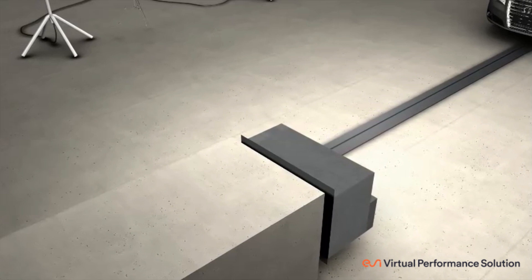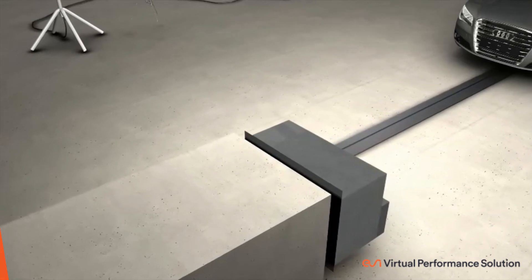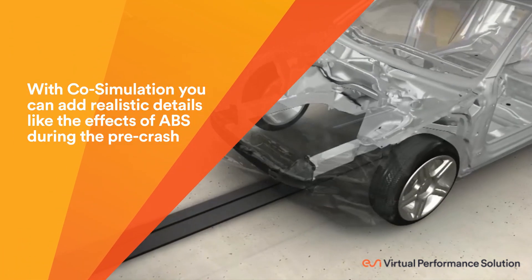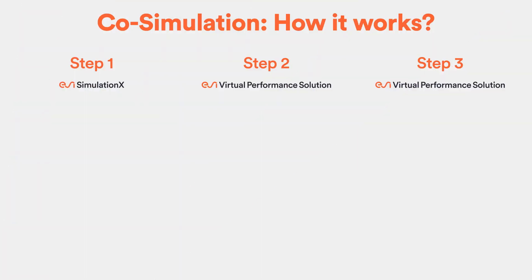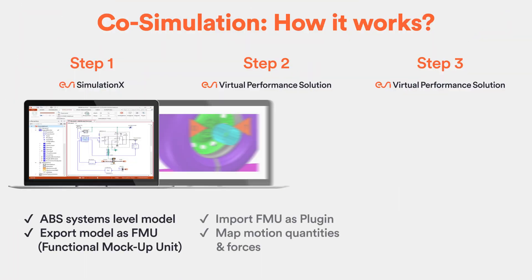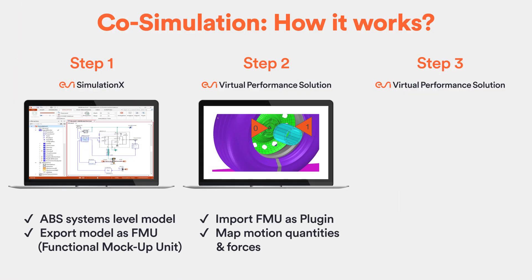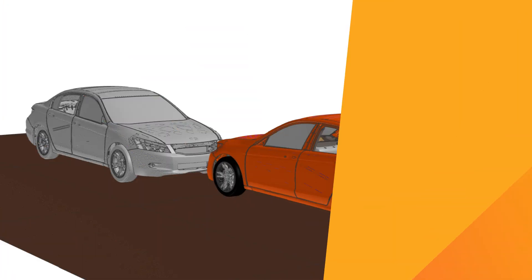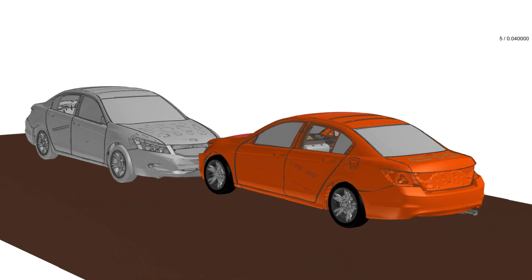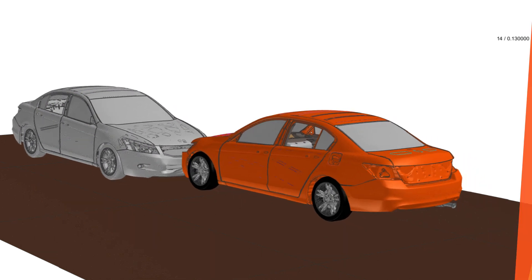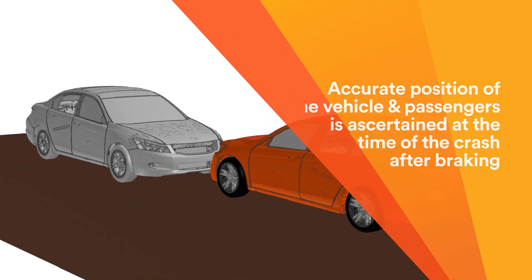Co-simulation then becomes a key approach to simulating pre-crash scenarios effectively. This approach exchanges dynamic simulation models using the Functional Mock-up Interface between simulation software. As a result, you're able to accurately assess a wide range of pre-crash scenarios in the case of ABS.